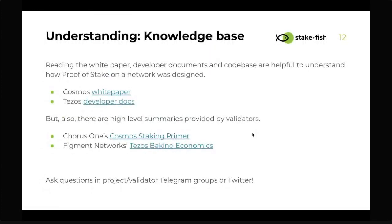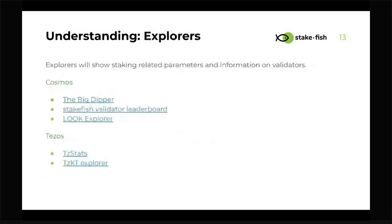Those are the three primary categories of tools for engaging with a proof of stake network. Now let's go into understanding the network, starting with the knowledge base. You can go to white papers, developer documents, and code bases — but frankly, if you're not technical or are scared of huge paragraphs, these won't be helpful. I recommend finding high-level summaries provided by validators like Chorus One and Figment. If those are still too complicated, feel free to ask questions on the project's Telegram group or Twitter — people are very helpful.